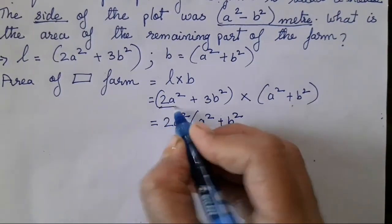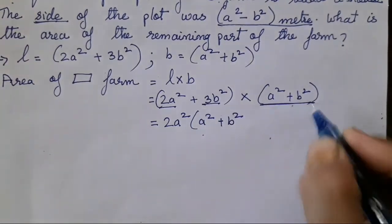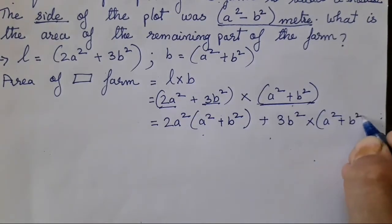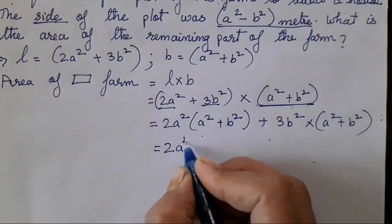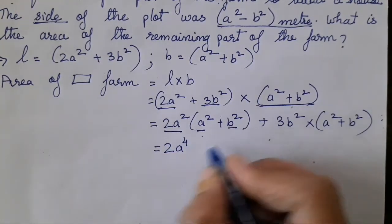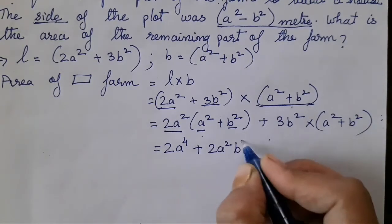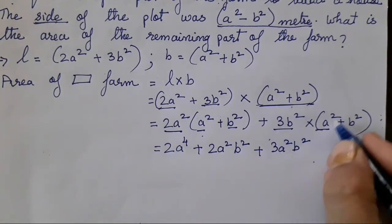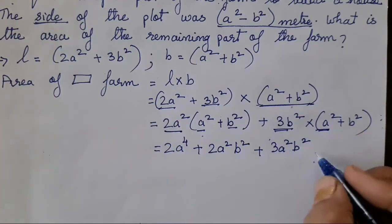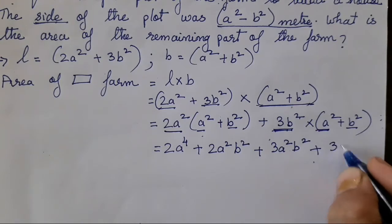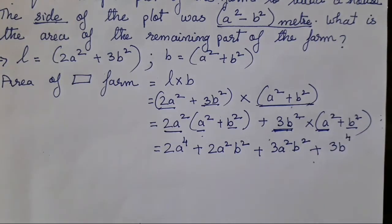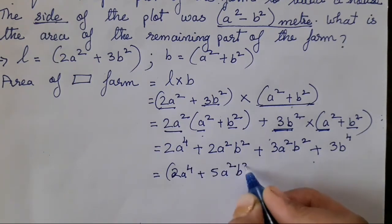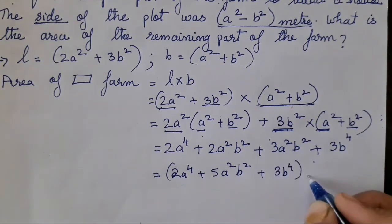Simple multiplication — we have already done this. Multiply 2a² with the complete bracket, then 3b² with the complete bracket. So: 2a² into a² is 2a⁴, 2a² into b² is 2a²b². Then 3b² into a² is 3a²b², and 3b² into b² is 3b⁴. Combining like terms: 2a⁴ plus 5a²b² plus 3b⁴ metre square. This is your area of the rectangular farm.